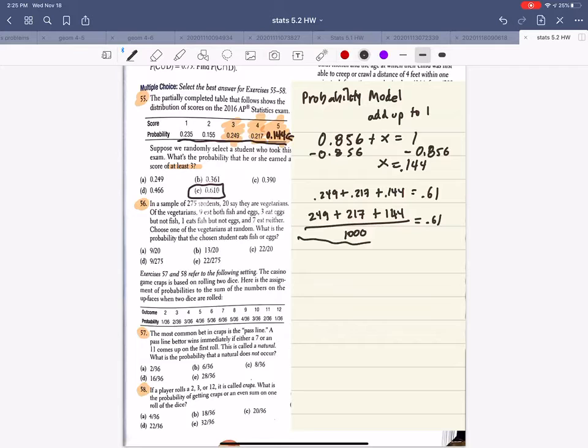So I will have to make a table for this. Of the vegetarians. Okay. So we have 275 students. We got that, right? 20 say they are vegetarians. So this is not a vegetarian.